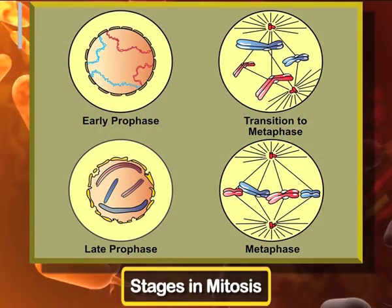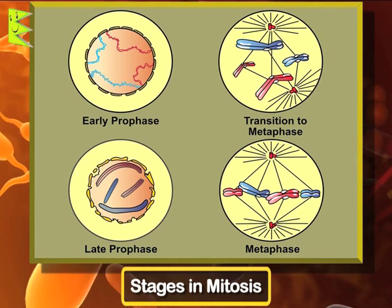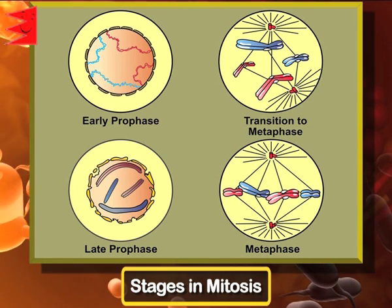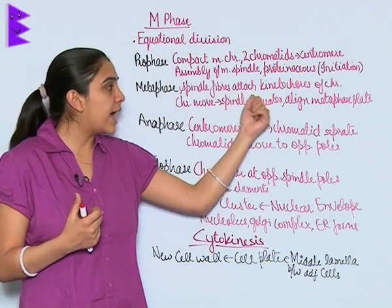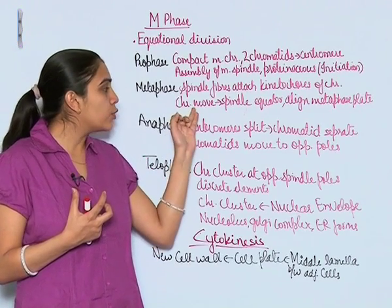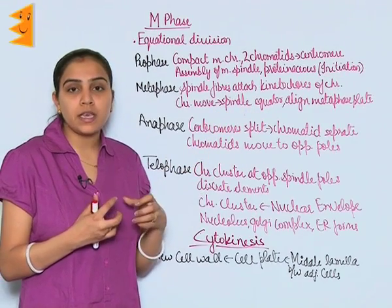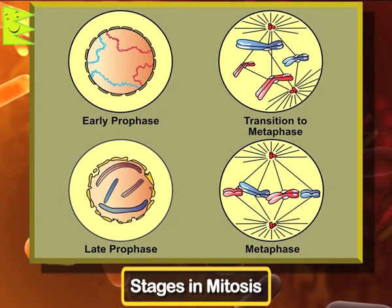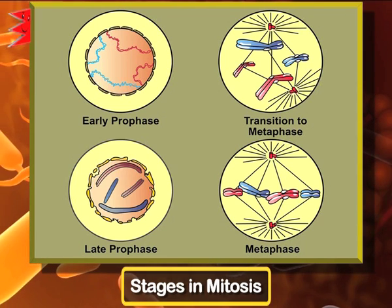You can see in the diagram early prophase, late prophase, and then the transition towards metaphase. In metaphase, spindle fibers attach to the kinetochores of chromosomes. Chromosomes further move towards the spindle equator and get aligned at the metaphase plate, which you can see in the center of the diagram.